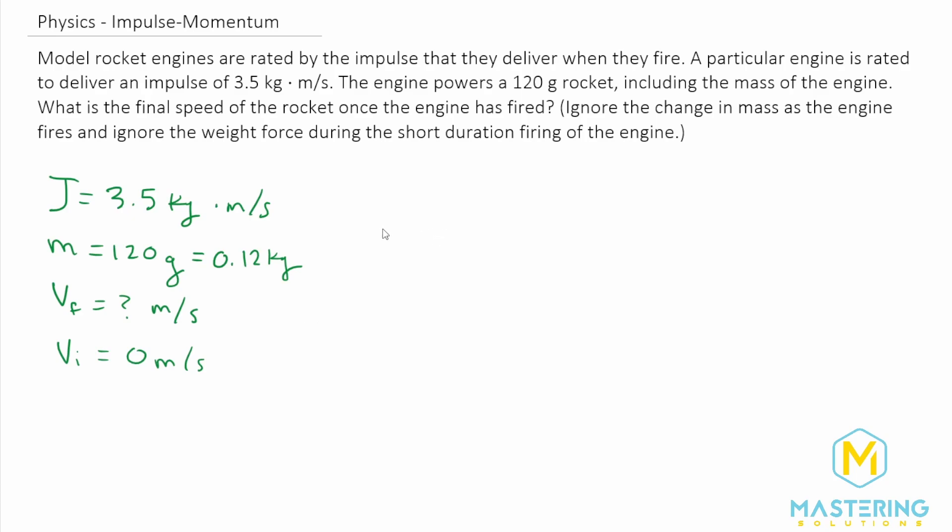So since we're discussing impulse, let's write the formula for impulse and what it is. So we know J for impulse is equal to the change in the momentum. And the change in momentum is the mass times the change in velocity.